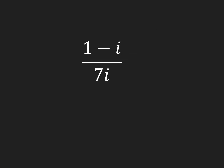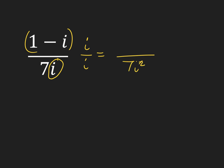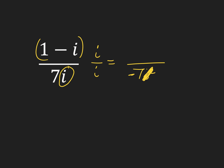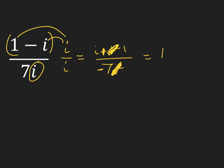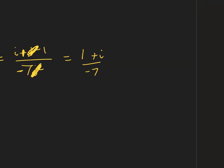Same thing over here — I have an i in my denominator. I can multiply the top and bottom by 7i or just i itself. I'm going to use just i itself. So I multiply the top by i and the bottom by i. On the bottom I have 7i squared, which becomes negative 7. On the top I have i times 1 is i minus i times i is i squared, which becomes positive 1. So now writing this in standard form: 1 plus i over negative 7. Separated into a plus bi: 1 over negative 7 plus i over 7.